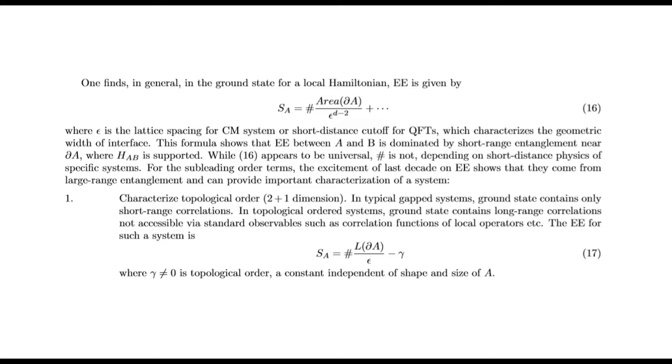Characterizing topological order in 2+1 dimensions: In typical gapped systems, ground state contains only short-range correlations. In topological order systems, ground state contains long-range correlations not accessible via standard observables such as correlation functions of local operators. The entanglement entropy for such a system is S_A = α|∂A| - γ + ..., where γ ≠ 0 for topological order, a constant independent of shape and size of A.